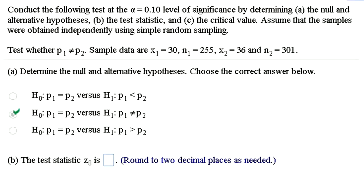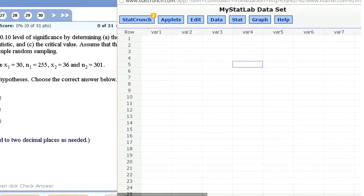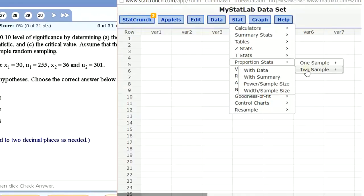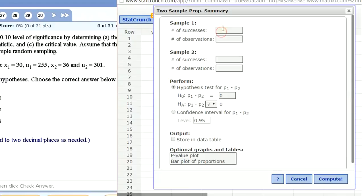Now I want to show you how in StatCrunch we can run the hypothesis test. So under Stat, under the Proportion Stats, Two Sample with Summary, we just enter from the first sample we have 30 out of 255 and from the second sample we have 36 out of 301.